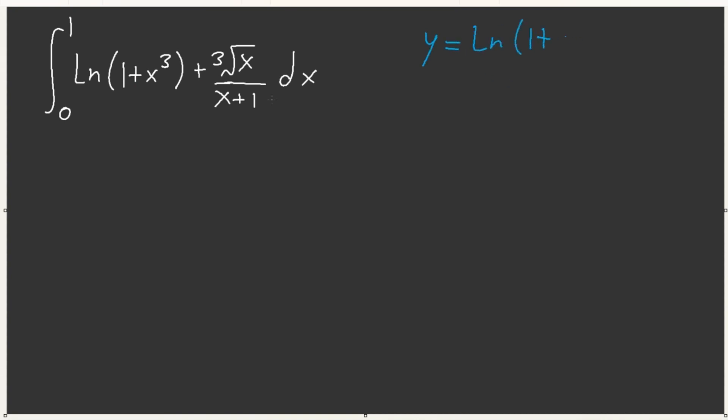So, ln of 1 plus x cubed. We do e to the y minus 1 to cube root. So there's an inverse. This looks nothing like our inverse function. So, what do we do? Do we just ignore this and just algebraically solve both functions? Or, we can force this function to become similar to this inverse.